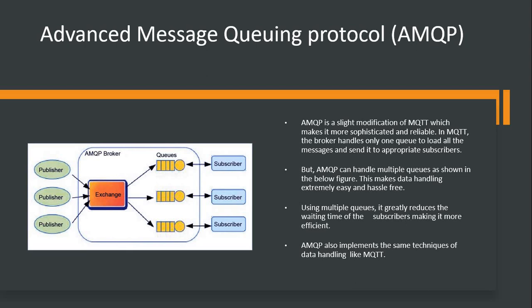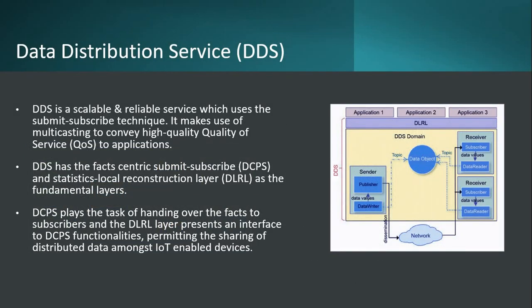AMQP is advanced, secured, and fast. It implements the same techniques of data handling as MQTT in terms of security and reliability, but with a different number of queues. It is most widely used in the industry right now. The final one is DDS — Data Distribution Service. This is very scalable and reliable, using a publish-subscribe technique. It uses multicasting to convey high quality of service to applications, and DDS has the Data-Centric Publish-Subscribe layer (DCPS) and the Data Local Reconstruction Layer (DLRL) as its fundamental layers.